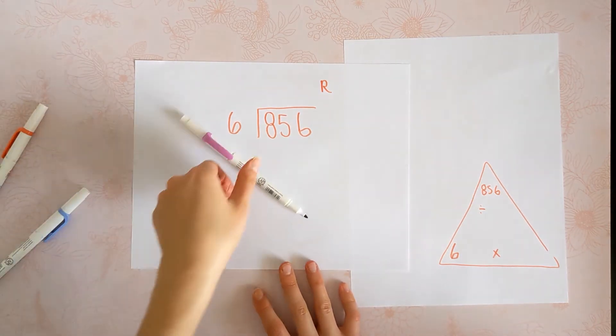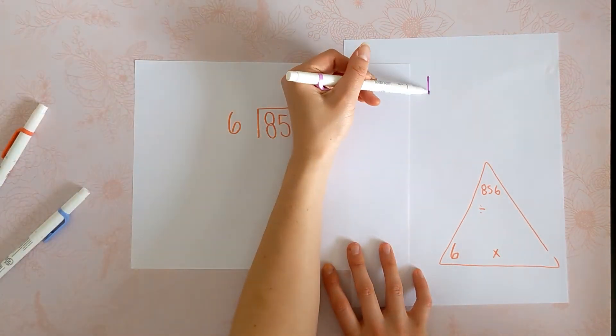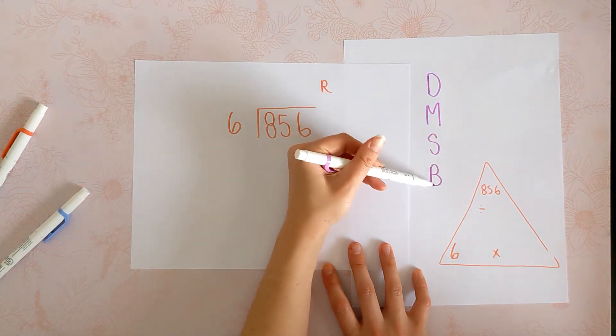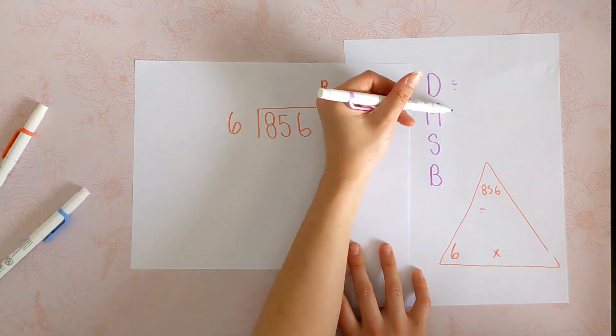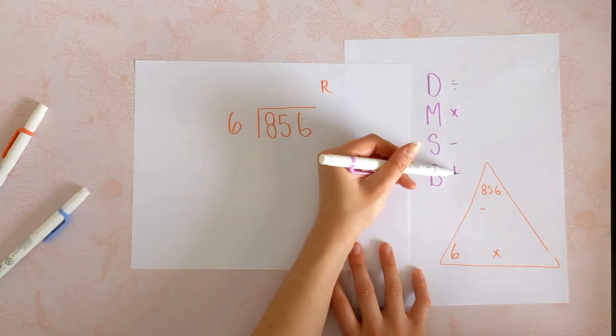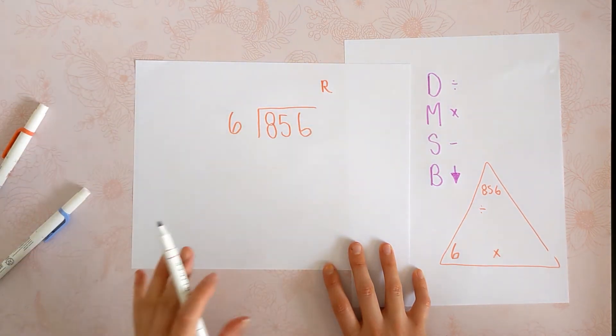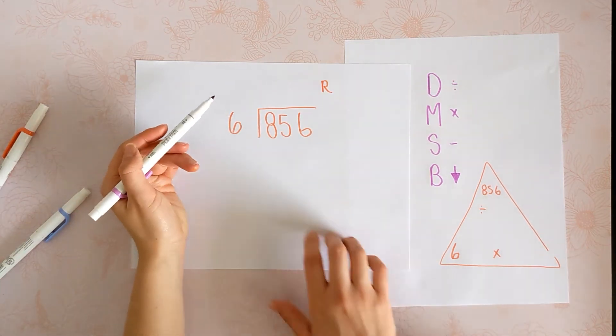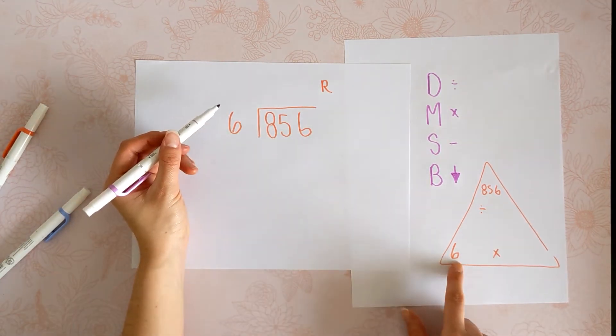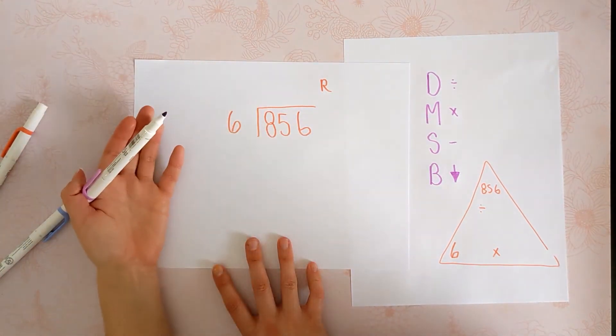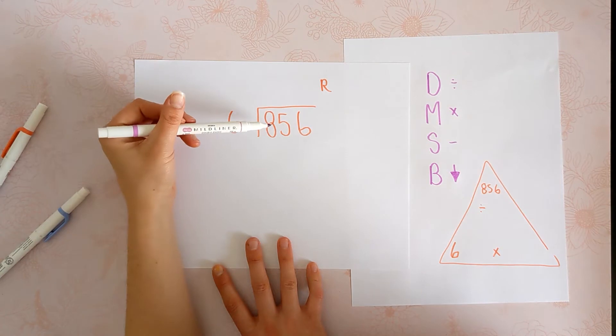We're using the standard algorithm, and that is D, M, S, B: divide, multiply, subtract, bring down. And I remember it as, does McDonald's sell burgers? And we do one at a time, always dividing by 6 because that's our divisor, and always doing the step with the last thing we touched.